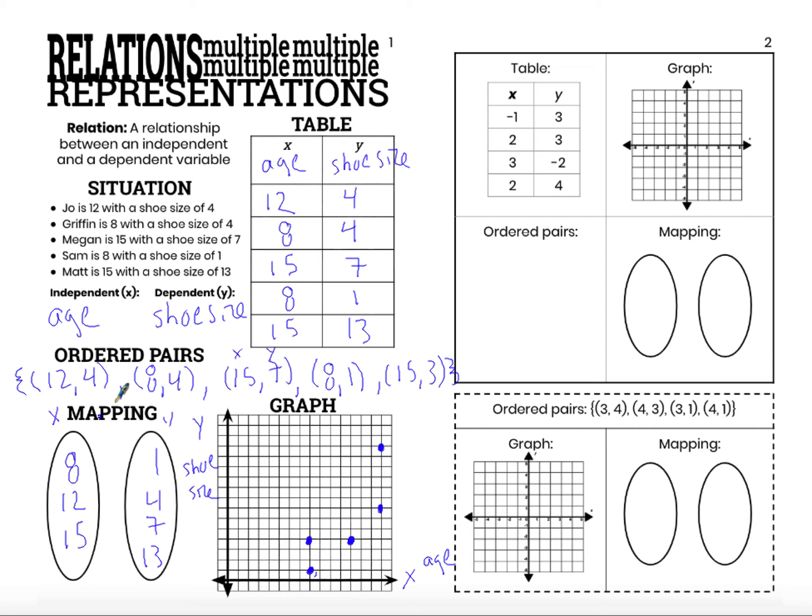So this is my list of independent, my list of dependent variables. And then I represent the relation with arrows going from my independent to my dependent, showing which pairs go together. So we represent Joe with an arrow from 12 to 4. Sometimes we just do a line, and that's okay. I think on some of my answer keys, I just do lines because it's less messy.